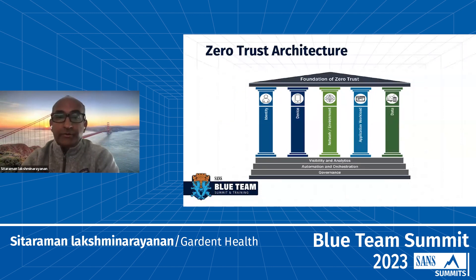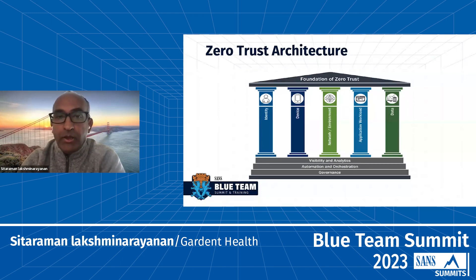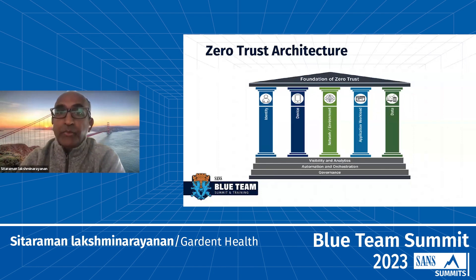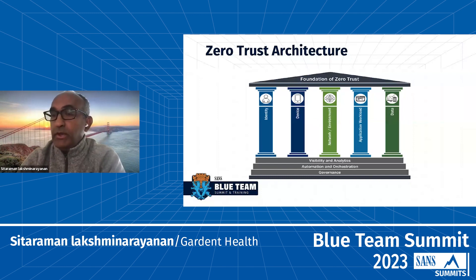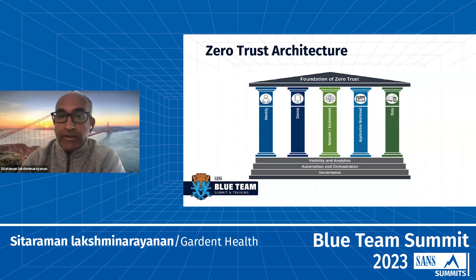I want to start with the go-to Zero Trust slide from CISA. I have the reference list towards the end of the slide. If you look at this, there are a few pillars: identity — everyone says that's the new perimeter. We have single sign-on, username and password, passwordless authentication, and it goes on.